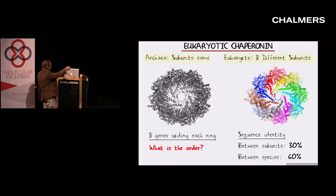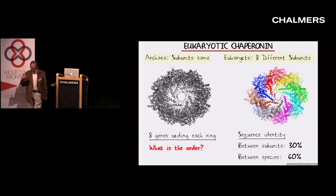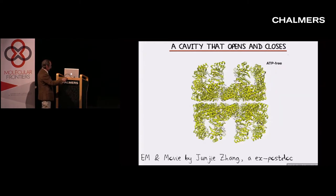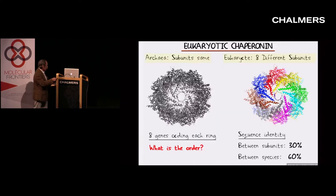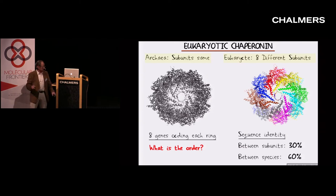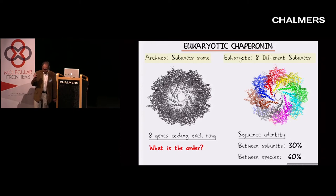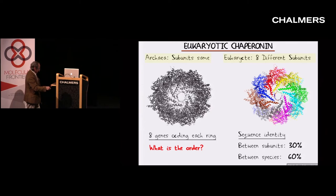In Archaea, the third kingdom of life, essentially all 16 subunits are exactly the same. The molecule has two rings, each of which has eight subunits. In Eukaryotes, all the way up from yeast to humans, there are always eight different genes. The genes are actually quite similar — say the grey gene and the brown gene have about 30% identity.